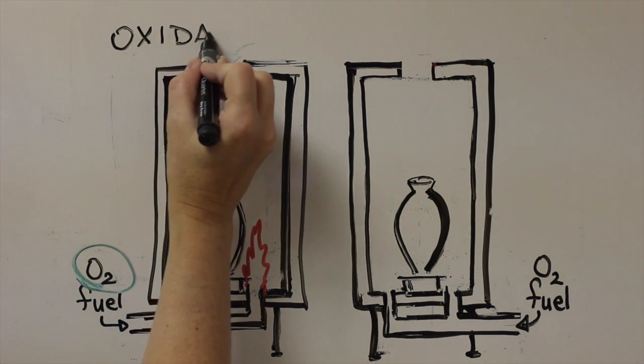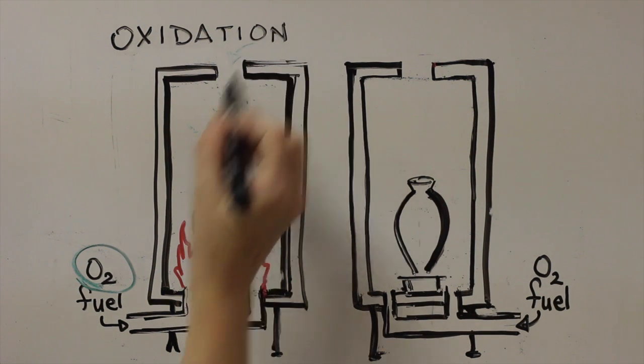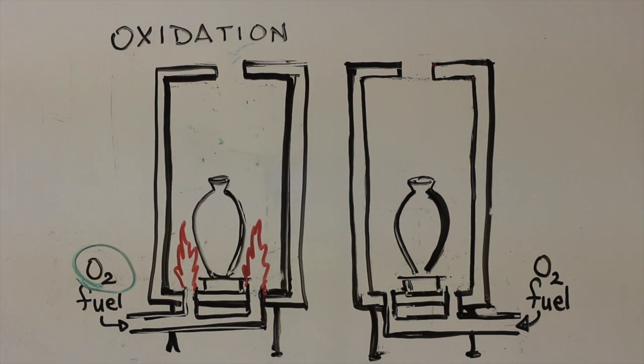In gas firing, oxidation is achieved by opening flues or dampers or increasing airflow from the burners. Electric kilns, because there is no combustion of fuel, are generally referred to as being in oxidation.